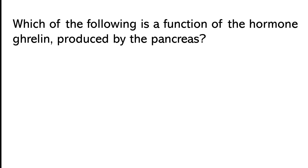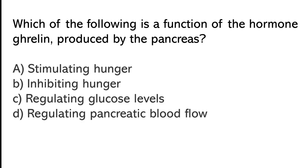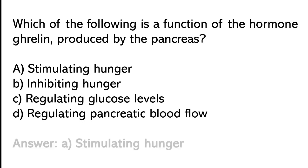Which of the following is the function of the hormone ghrelin produced by the pancreas? Stimulating hunger, inhibiting hunger, regulating glucose levels, or regulating pancreatic blood flow. The correct answer is option A — stimulating hunger.